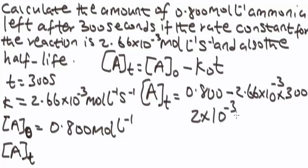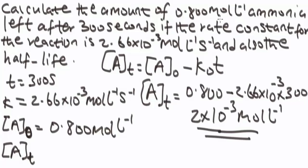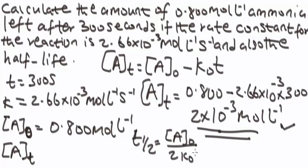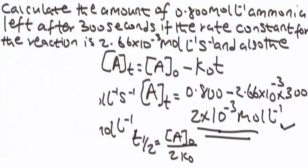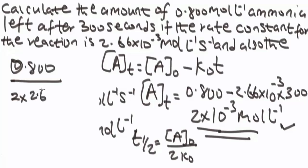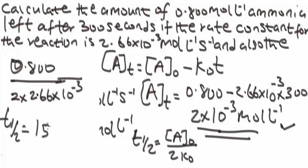When you punch this in the calculator, you get A_t = 2 times 10 to the power minus 3 mol, which will be the final concentration. For the half-life: t_(1/2) = A_0 over (2 times k_0) = 0.800 over (2 times 2.66 times 10 to the power minus 3). The half-life is 150.37 seconds, leaving it in two decimal places.